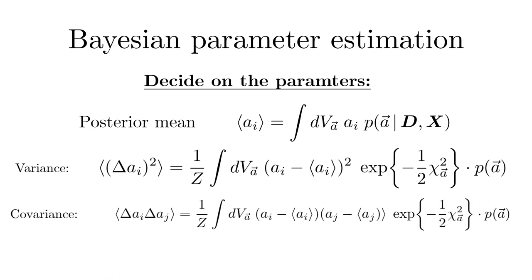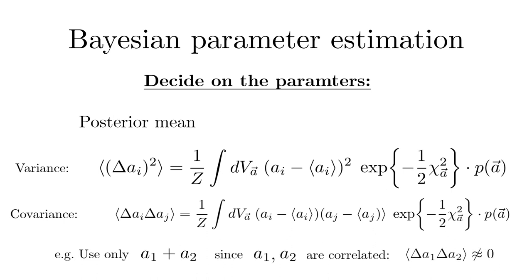It tells us whether uncertainties are correlated. For instance, it could be that only a combination A1 plus A2 is well defined by the data, while the individual values are not. This can be seen in the covariance.